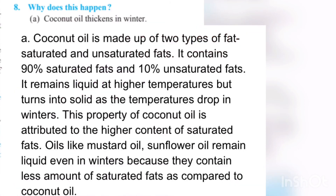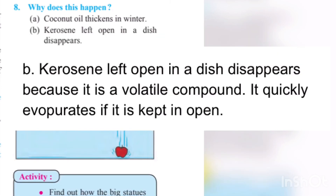Question number eight: Why does this happen? First: Coconut oil thickens in winter. The answer is on the screen — you can copy it down or take a screenshot. Second: Kerosene left open in a dish disappears. If we keep the oil open, it will evaporate, because kerosene is volatile.